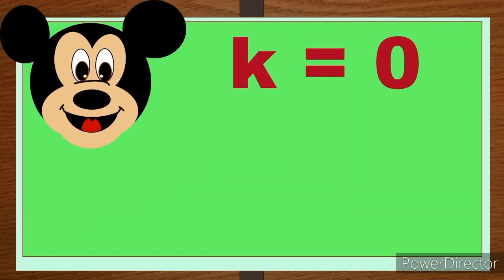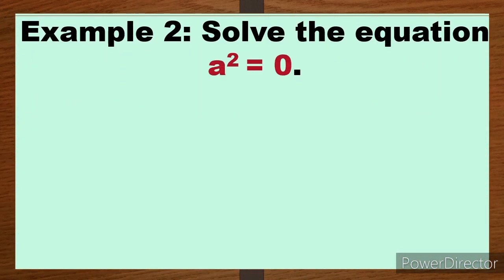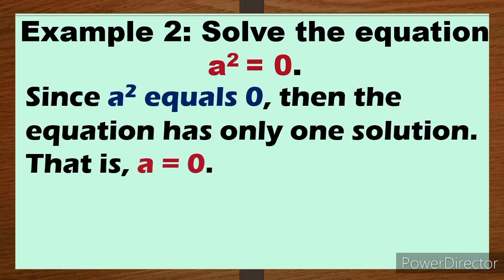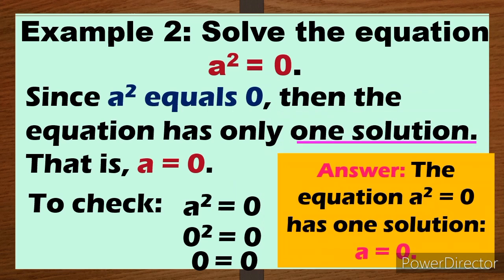That is an example of the first property. Next, the second property where k = 0. Example: solve the equation a² = 0. Our k here is 0. Since a² = 0, the equation has only one solution and that is a = 0. To check: substituting 0 gives 0² = 0, therefore 0 = 0. The solution is only one: a = 0.